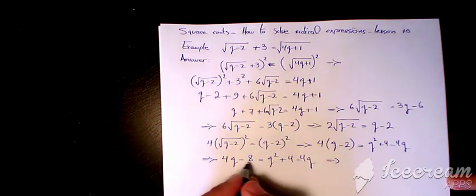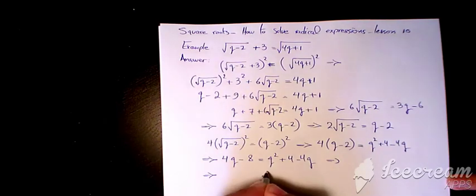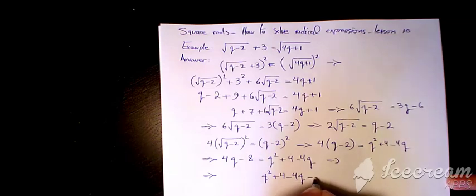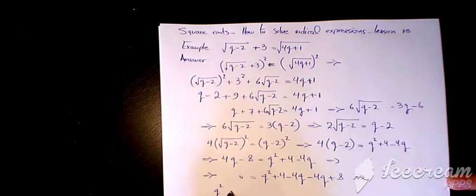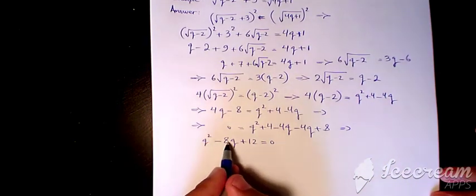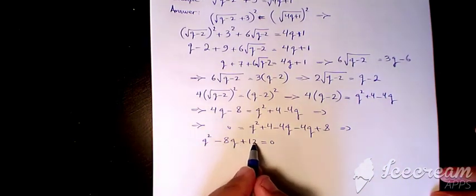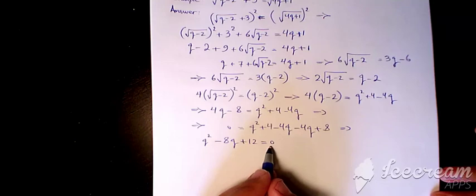Then I move everything to the right-hand side: q squared plus 4 minus 4q, minus 4q, plus 8. This simplifies to q squared minus 8q plus 12 equals zero. So q squared minus 8q plus 12 equals zero. Now we need to factor that.